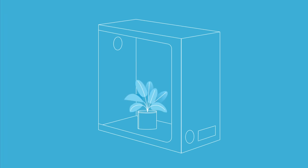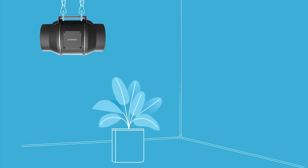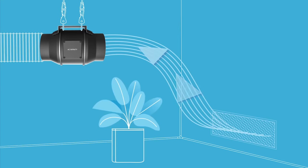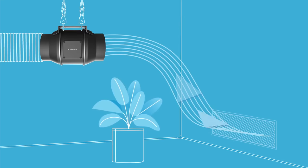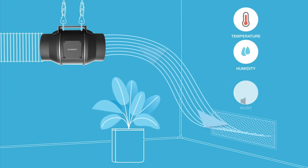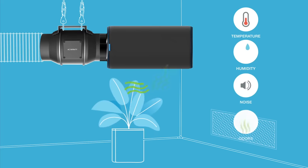An optimal ventilation setup for your grow space will not only provide a constant supply of fresh air for your plants, but also regulate the temperature, humidity, noise, and prevent odors.